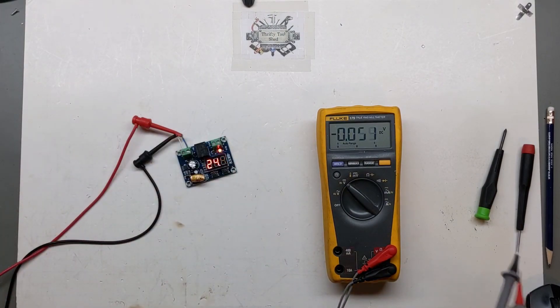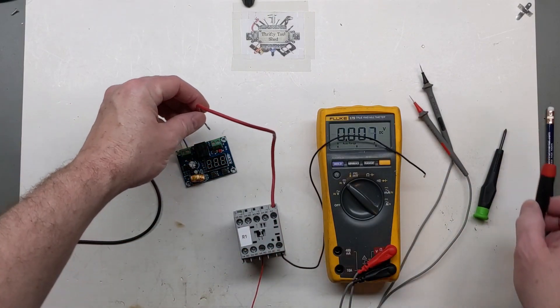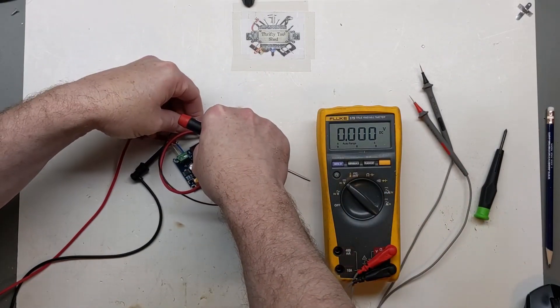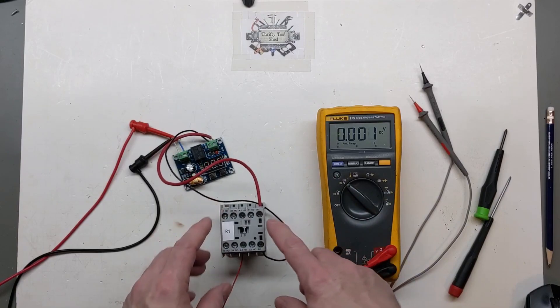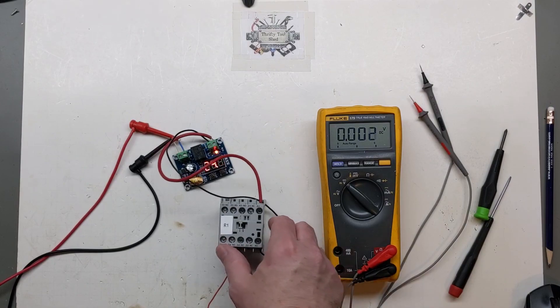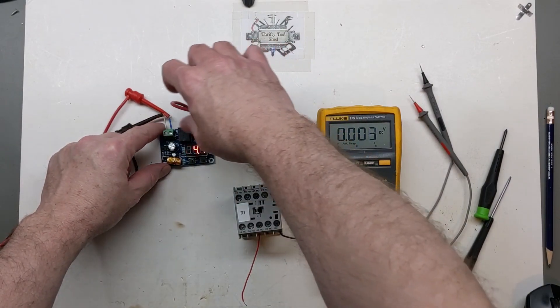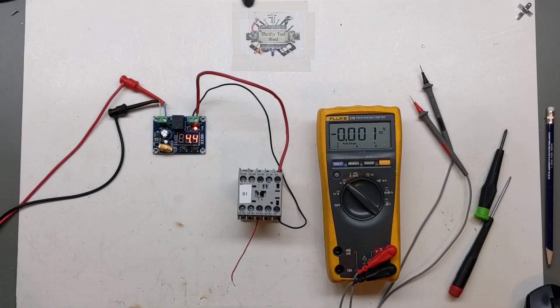I can also hook a load up to this. Let's just bring over this little small relay. So now with the relay coil across the output, hopefully you can hear that click to give us a little bit of an audio and a visual indicator as well as that LED light.